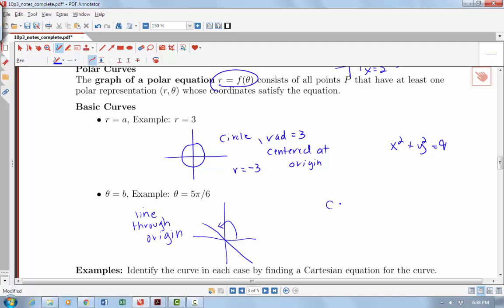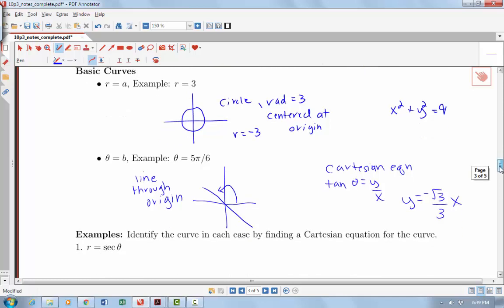If we wanted to figure out the Cartesian equation for that particular line, we know that tangent of theta was equal to y over x. So y is going to equal tangent of theta, in this case tangent of 5 pi over 6, which is negative root 3 over 3, times x. So the slope of this line is equal to tangent of the angle. A little bit uglier equation when it's a nice equation in terms of theta. But really, the polar equations are most useful for circles and other kinds of loops and things that we're going to see.